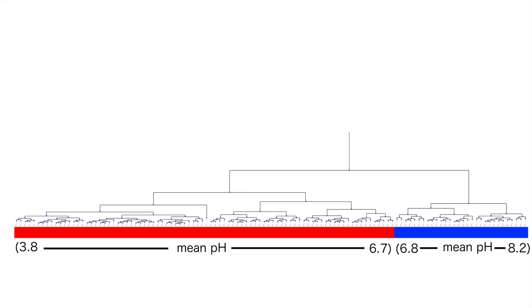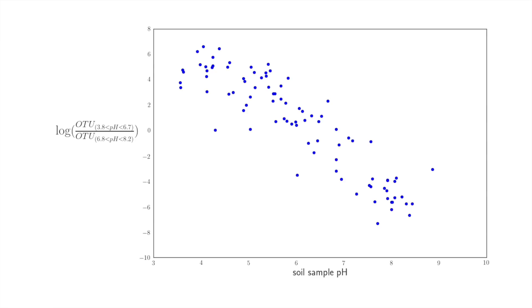Here, we were able to partition soil communities into acidic and basic parts. Looking at the log ratios of these parts, we're able to see the transition from acidic to basic communities as the pH increased.